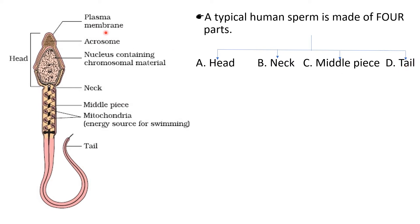Looking at the labeling of the sperm structure: the outermost layer is called the plasma membrane. The cap-like structure is the acrosome. The nucleus contains the chromosomal material and is present posterior to the acrosome in the head region. Below the head is the small neck region. Below the neck, the lengthy portion is called the middle piece, which contains spiral mitochondria. Below the middle piece, the slender region is the tail part.